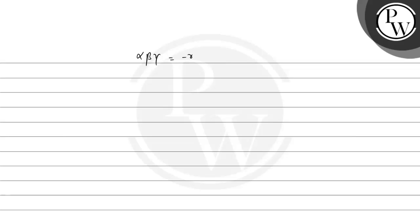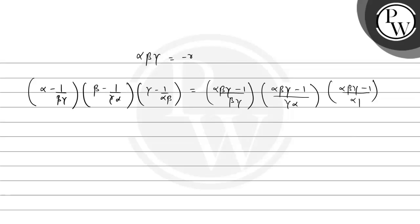Now we need to find the value of alpha minus 1 divided by beta gamma, multiplied by beta minus 1 divided by gamma alpha, multiplied by gamma minus 1 divided by alpha beta. We can rewrite this as alpha beta gamma minus 1 divided by beta gamma, then alpha beta gamma minus 1 divided by gamma alpha, then alpha beta gamma minus 1 divided by alpha beta.